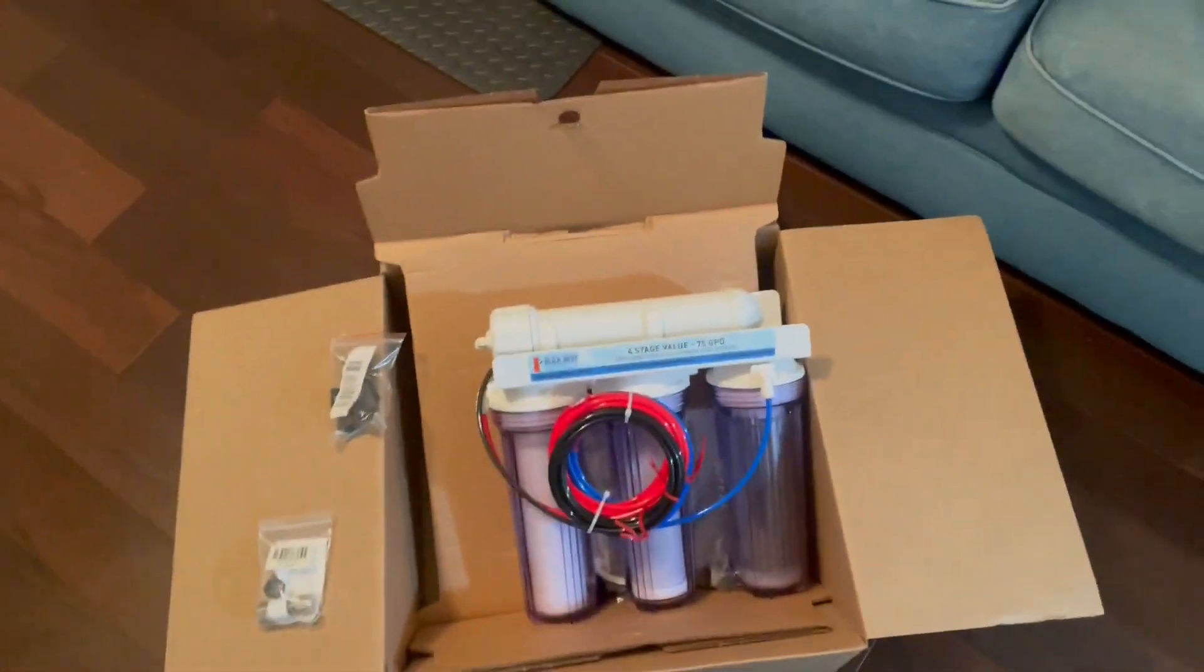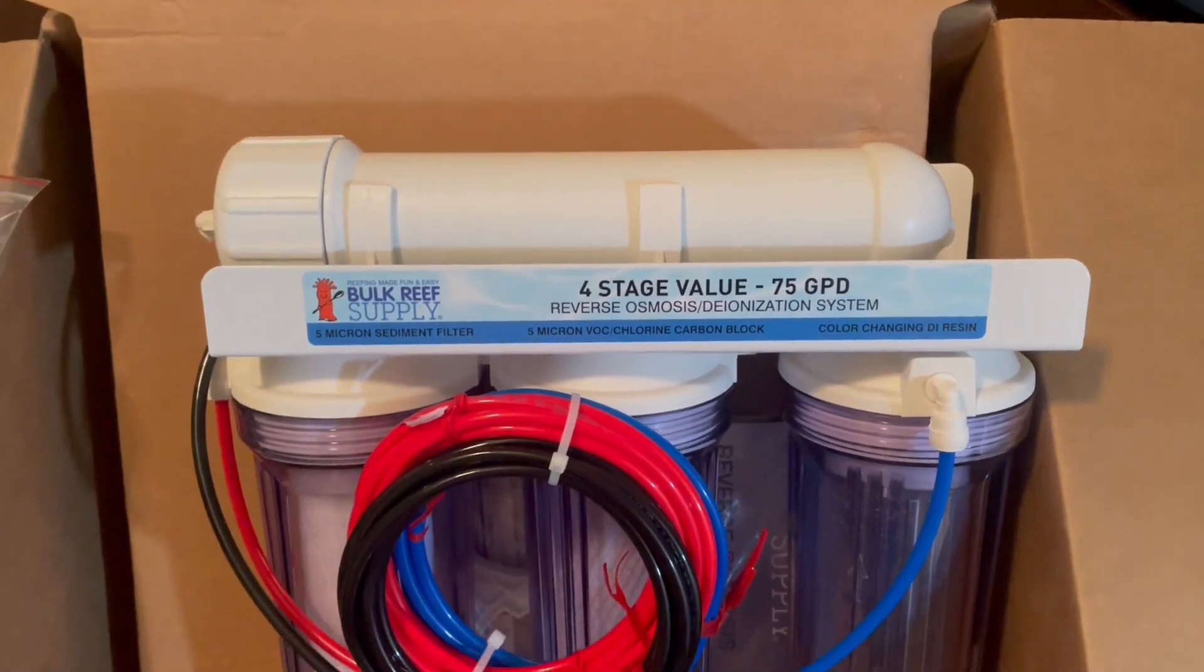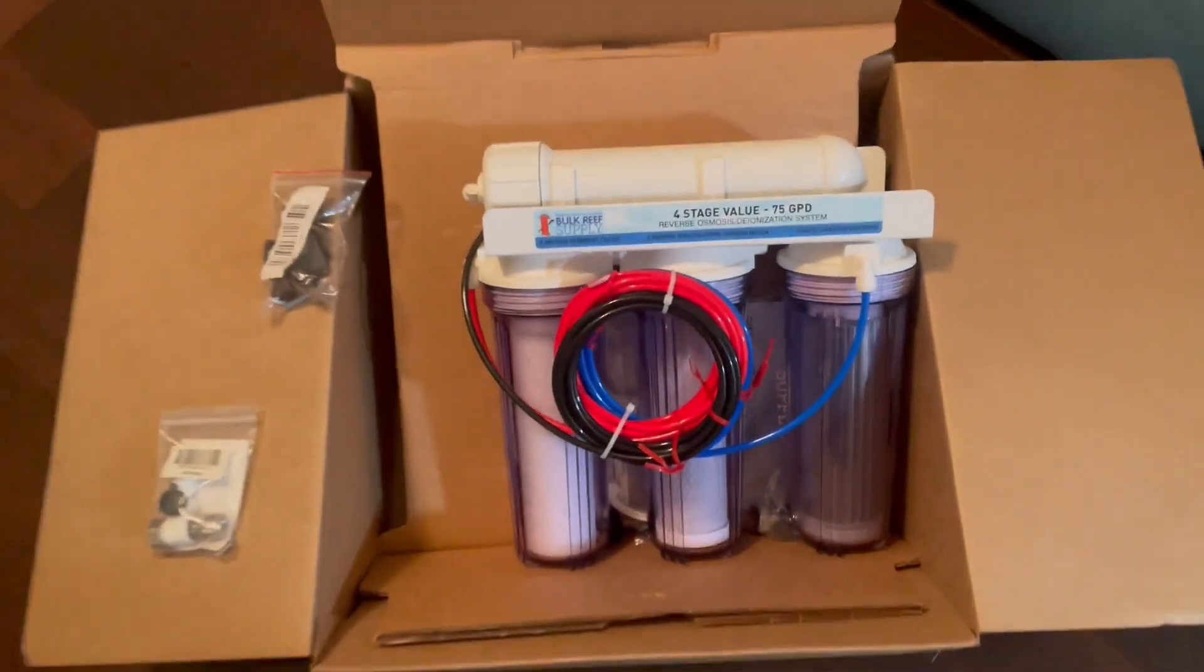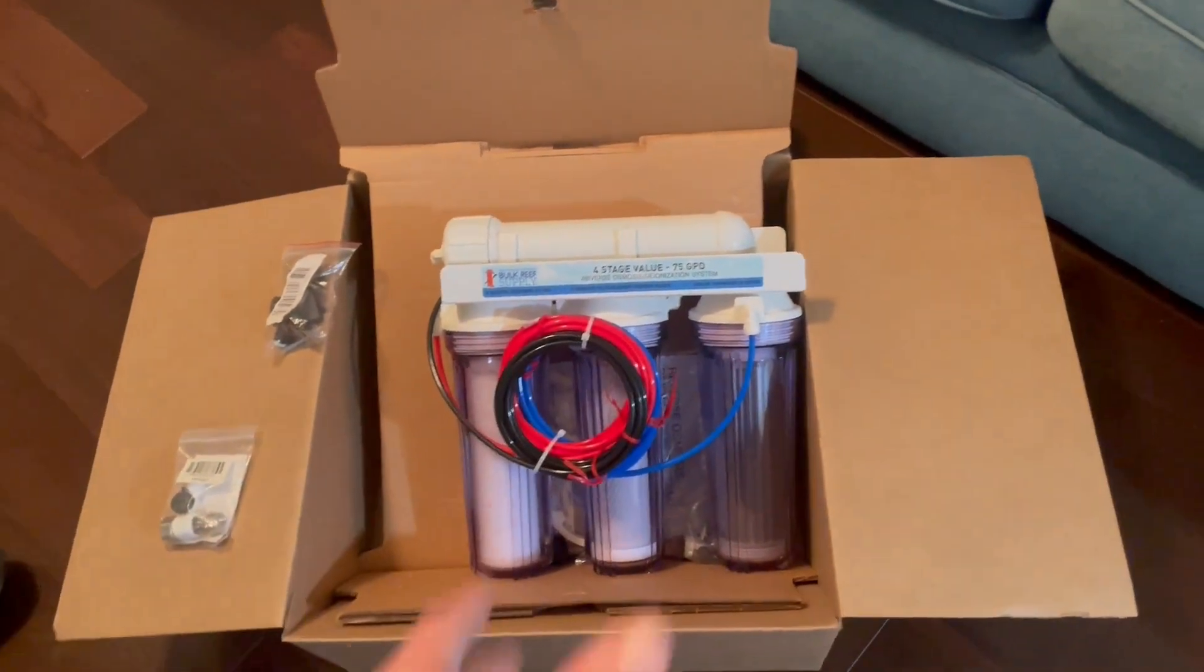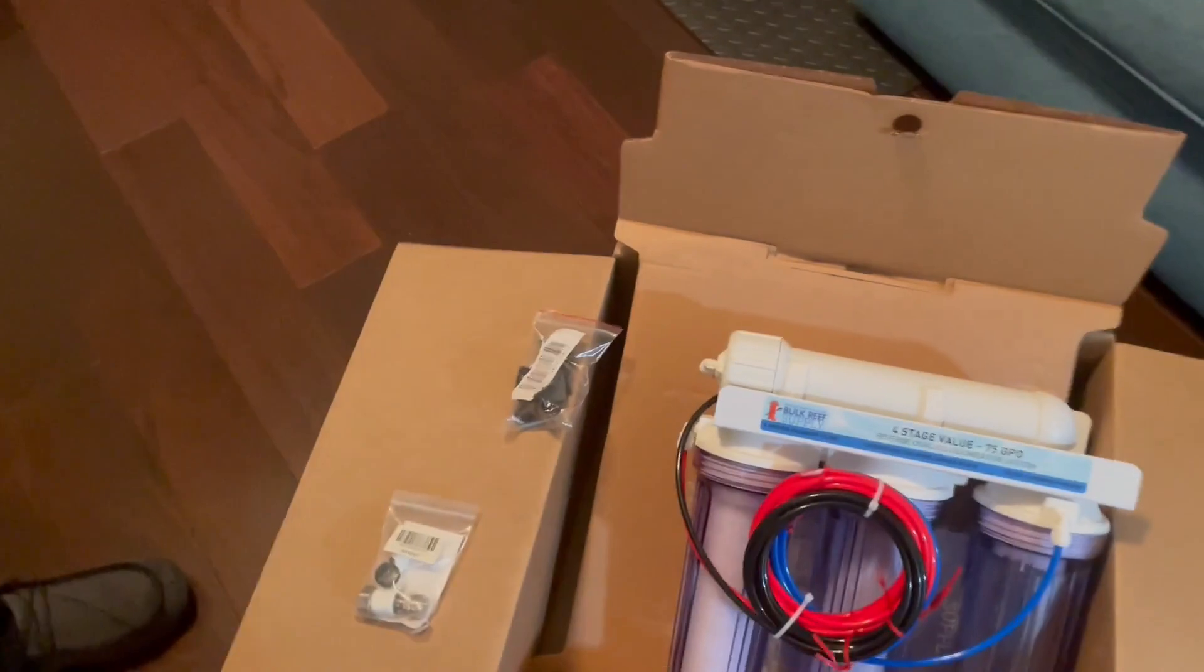What's going on y'all, Matters Aquatics here. Today I'm going to be showing you how to install a four-stage 75 gallons per day RODI system by Wolferry Supply. This is the cheaper option. I'm going to be tagging this in the description where to find it, and also these two parts - these are also something you're going to need.